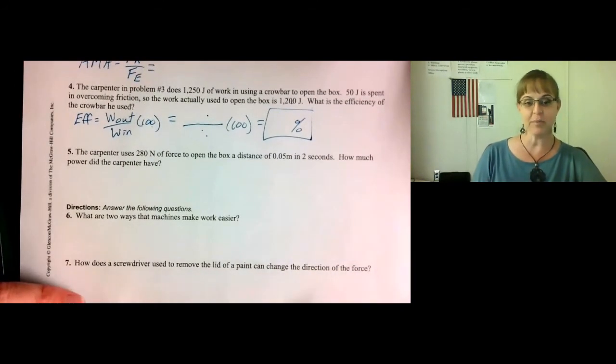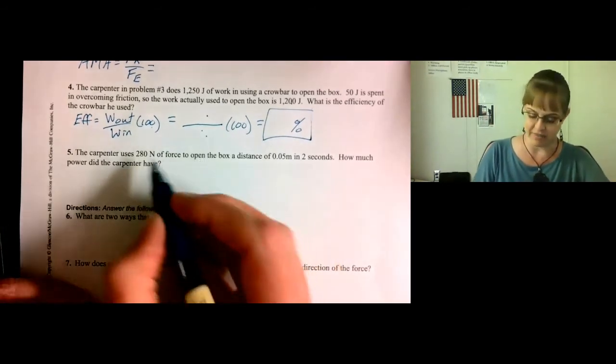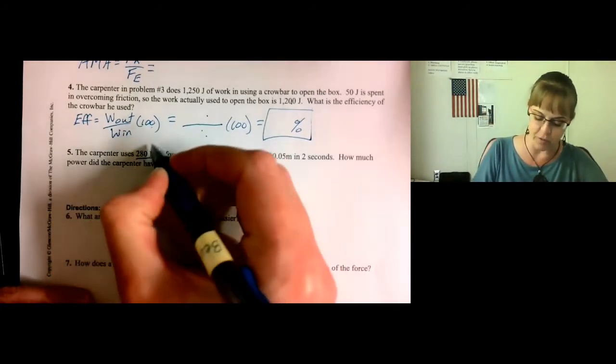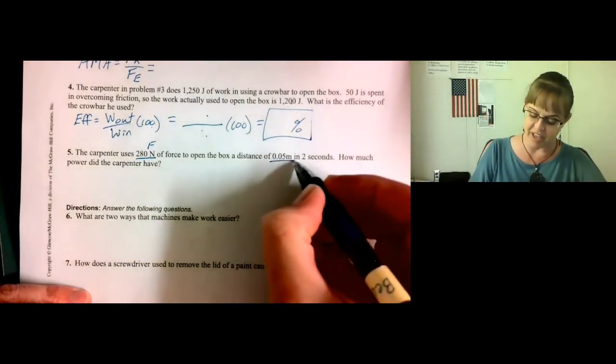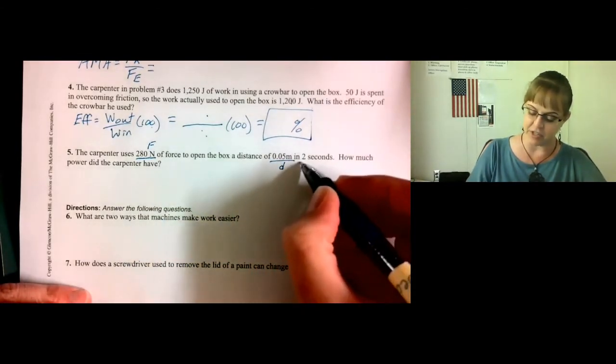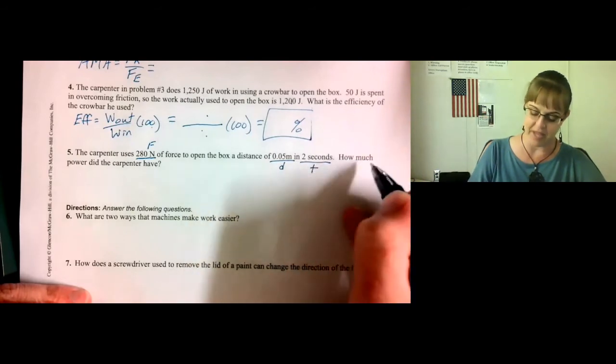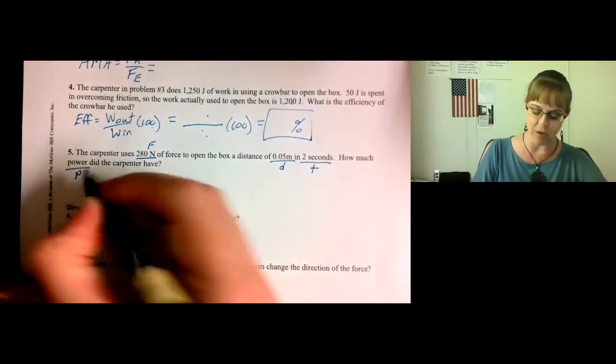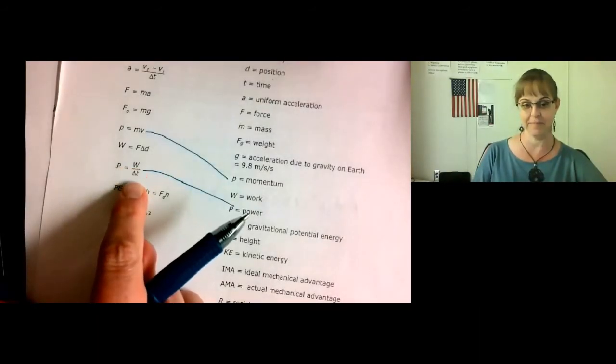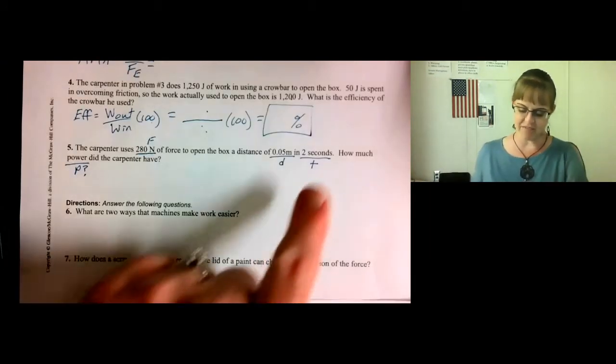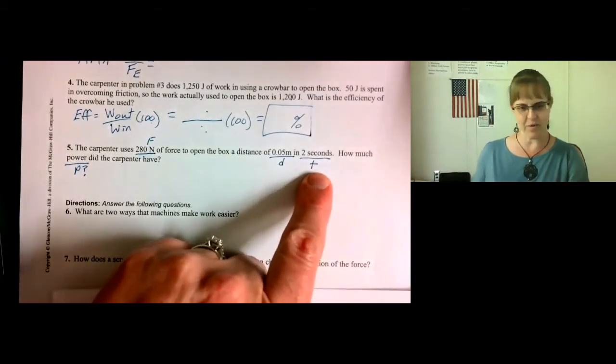Number five. The carpenter uses 280 newtons of force to open the box a distance of 0.05 meters in 2 seconds. How much power did the carpenter have? So we're looking for power. Now the formula for power is work divided by time. Well, wait a minute. We have time, but we weren't given work. So now what?